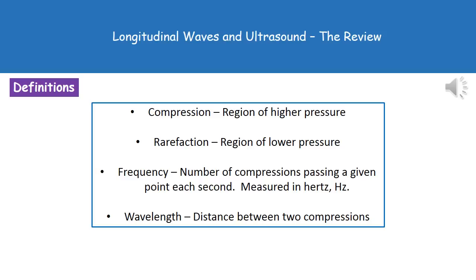Third is frequency, which is the number of compressions passing a given point each second. As with previous frequencies, it's measured in hertz, which has the symbol Hz. And finally, the wavelength, as we've already said, is the distance between two compressions.